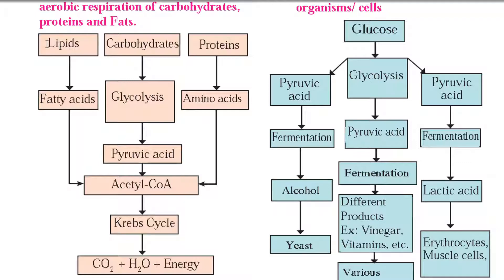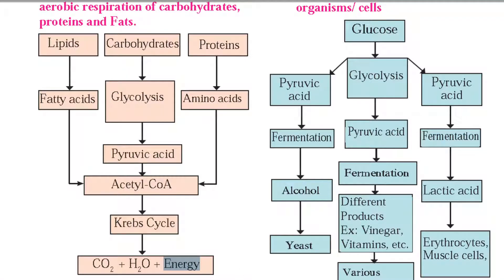If we are not taking food — either because we are hungry or fasting — our body still produces energy aerobically using stored food. The stored lipids or proteins can produce energy. Lipids produce fatty acids and proteins produce amino acids. These fatty acids and amino acids are further oxidized into acetyl coenzyme A, which again enters the mitochondria where the Krebs cycle and electron transport chain reaction take place, forming energy, carbon dioxide, and water.